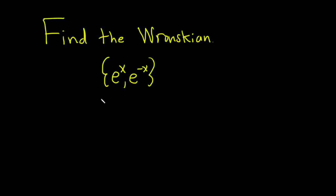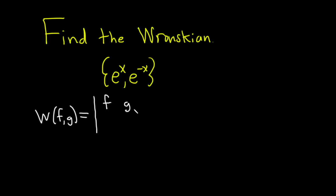First let me refresh your memory on what the Wronskian of two functions actually looks like. If you're taking the Wronskian of f and g, the Wronskian is going to be the determinant where you put your functions in the first row — so f and g — and then in the second row you put the derivatives of those functions. Then you compute the determinant.